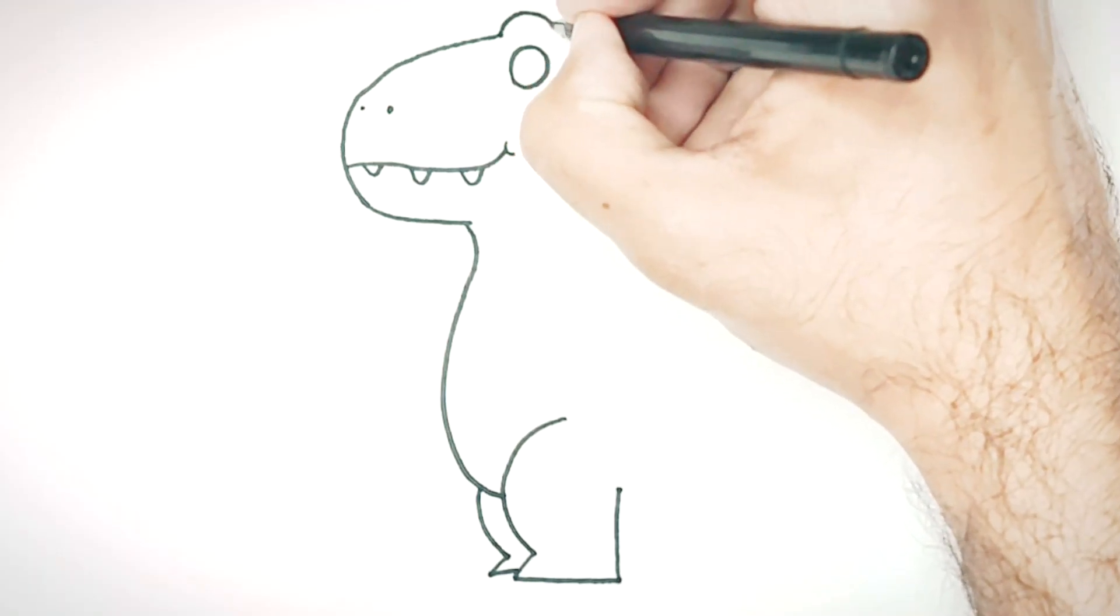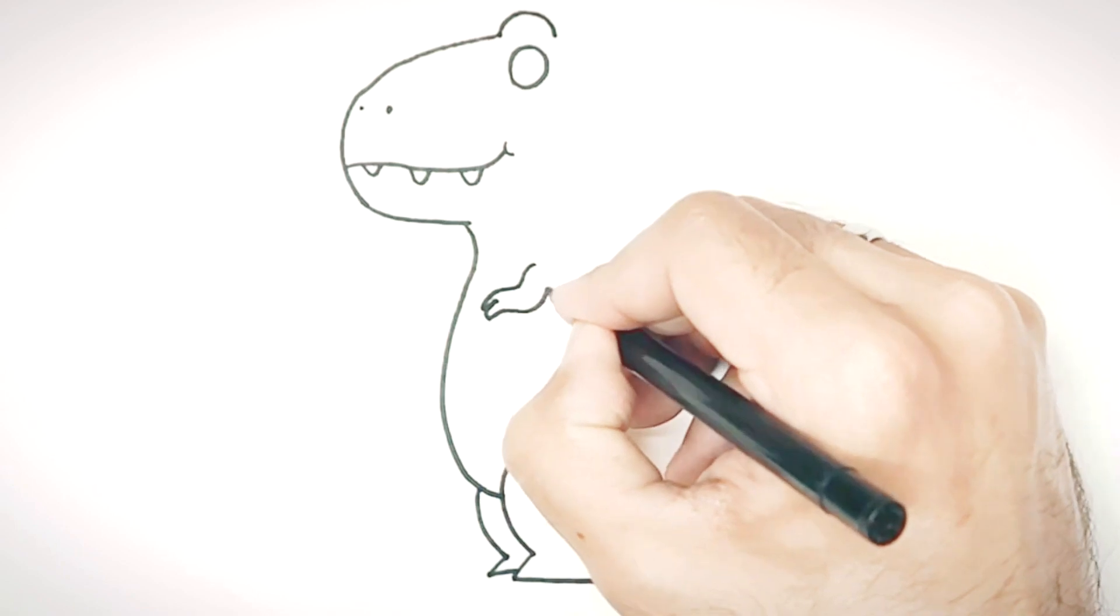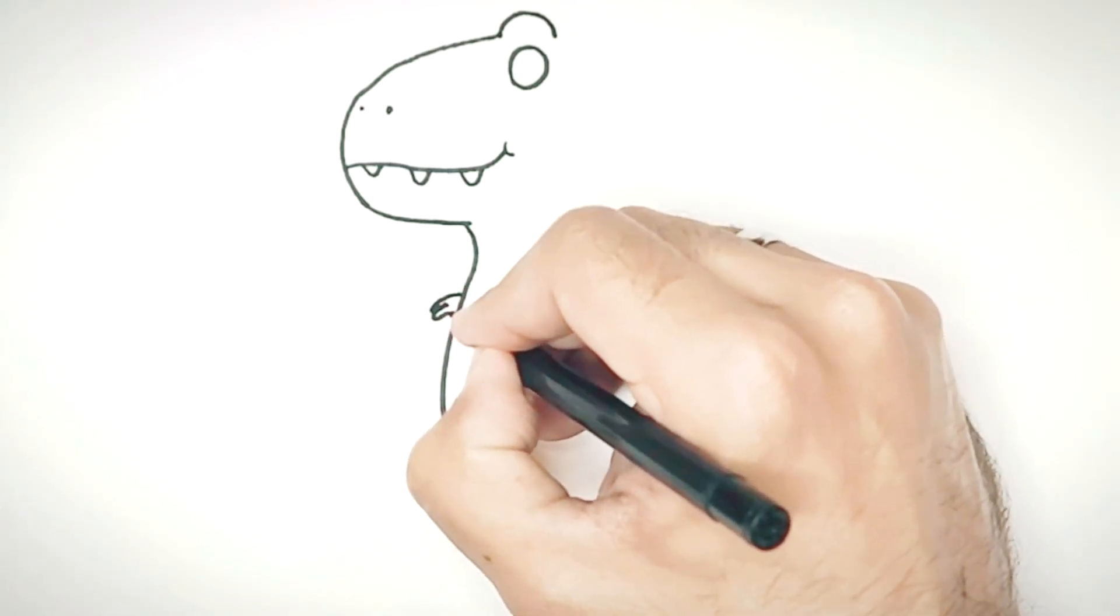Next, draw a curve above its eye and make a curved shape to draw one hand, then repeat the process to draw the other hand.